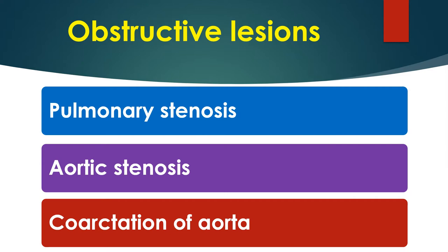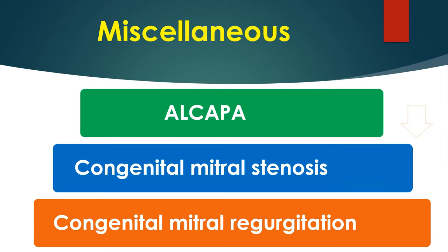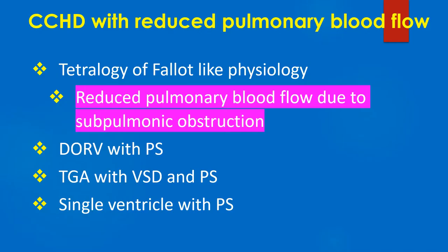Obstructive lesions include pulmonary stenosis, aortic stenosis, and coarctation of aorta. The miscellaneous group of acyanotic lesions includes anomalous origin of left coronary artery from pulmonary artery (ALCAPA), congenital mitral stenosis, congenital mitral regurgitation, and others.